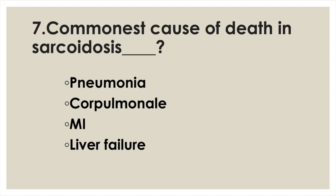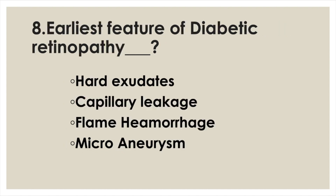Commonest cause of death in sarcoidosis: Option A: Pneumonia. Option B: Cor pulmonale. Option C: Myocardial infarction. Option D: Liver failure. Answer: Option B, Cor pulmonale.